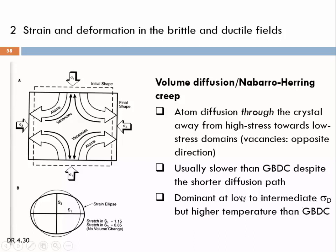For volume diffusion, we need low to intermediate differential stresses and usually higher temperatures compared to grain boundary diffusion creep.